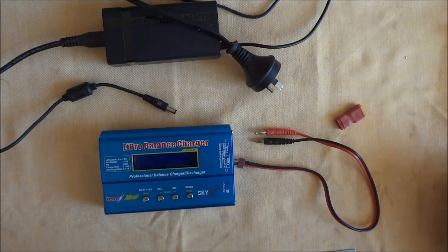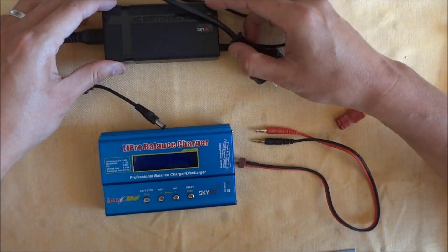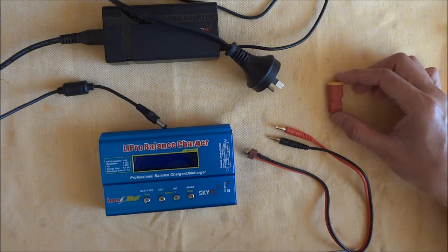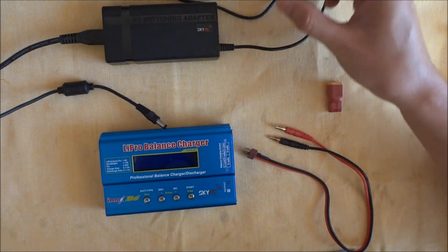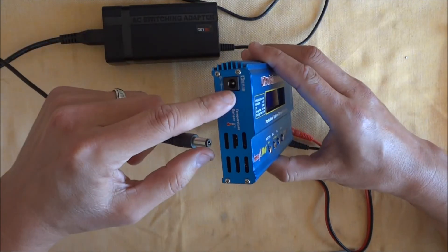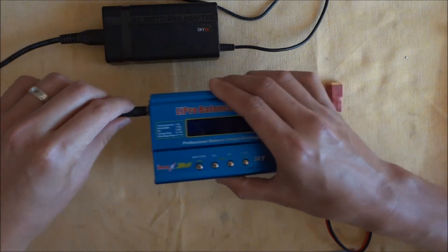Components and connection. We've got our main battery charger here. We've got our power supply. And we've got our charging leads and an adapter, a Deans to XT60 connector. So we won't plug it in the wall yet. From our power supply, we've got this connection, which is the DC 11-18 volts. So that plugs in there to the charger.